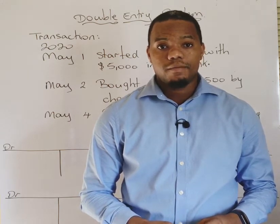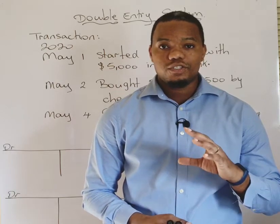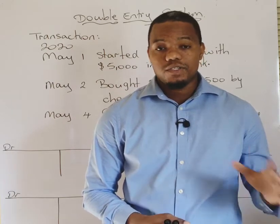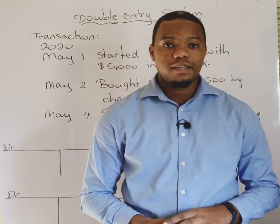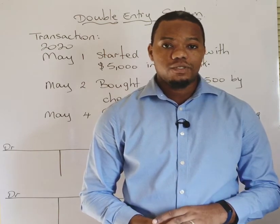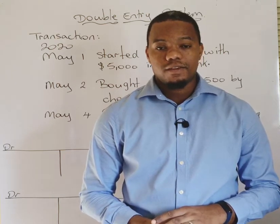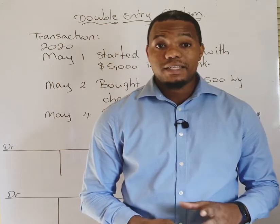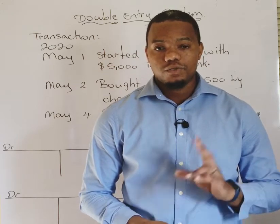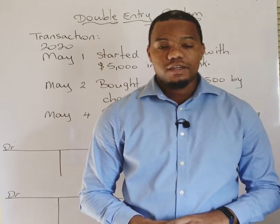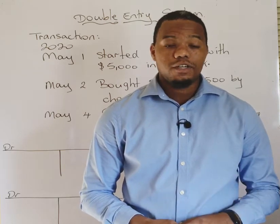The double entry system states that one transaction must be recorded two times — once on the debit side of a double entry account and once on the credit side. The debit side of a double entry account is the left-hand side, and the credit side is the right-hand side. I also spoke about there being two methods of teaching the double entry system.